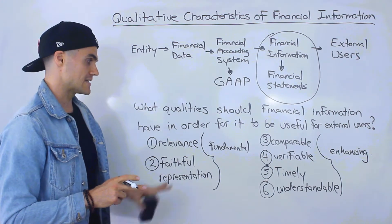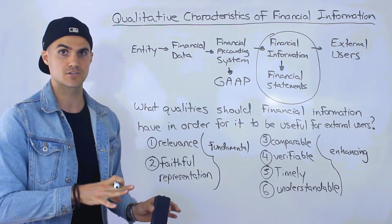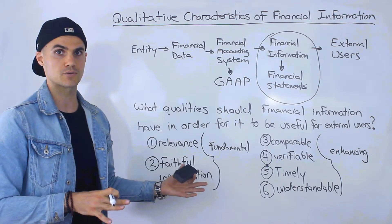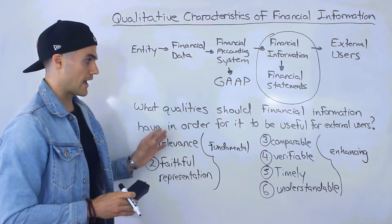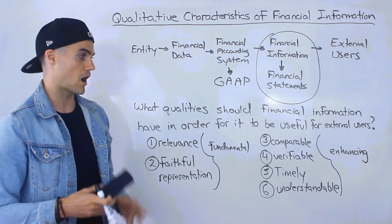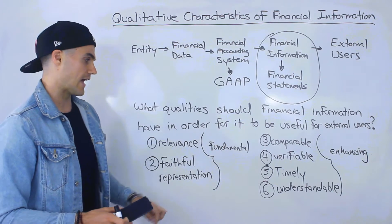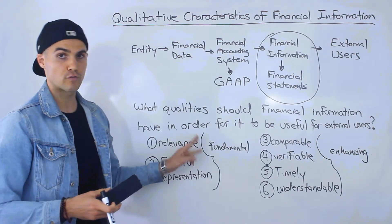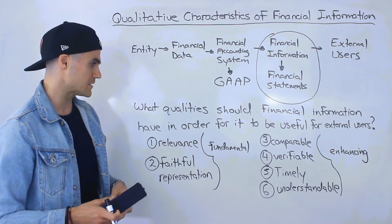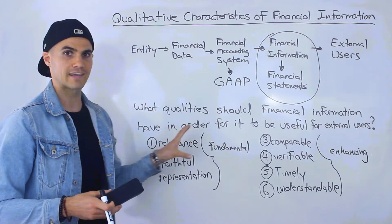The second thing I want to mention is that these six qualities are based on the 2010 standards. Before 2010, this list was actually different — it was a list created in 1989. Then in 2010 they decided to update the list. In my opinion, I think they're going to further update this list at some point.